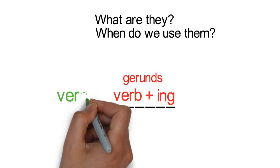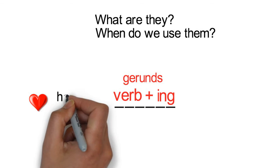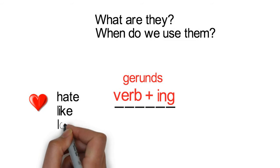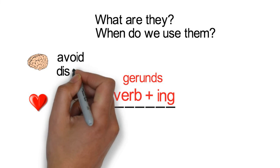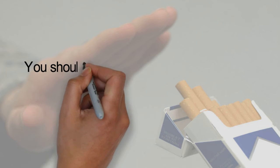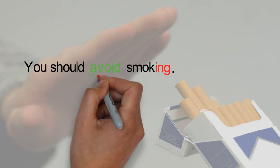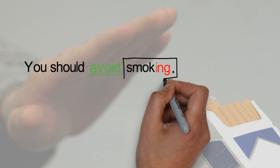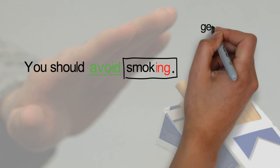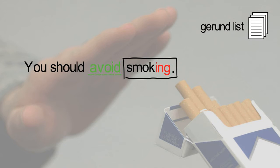Gerunds can be used after a verb. For example, they are used after verbs like hate, like, love, avoid, discuss, dislike, and enjoy. So, for example, in the sentence 'you should avoid smoking,' the verb avoid is followed by a second verb ending in -ing. You will find a list of verbs that can be followed by a gerund attached to your note-taking sheet.